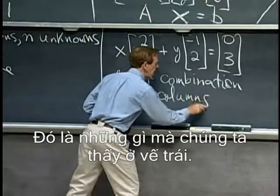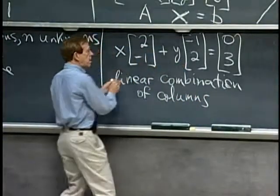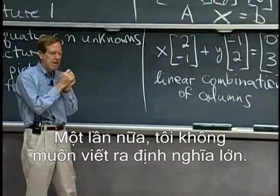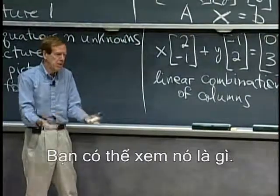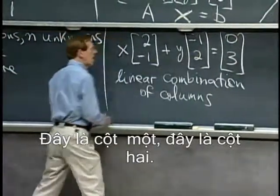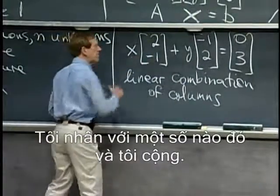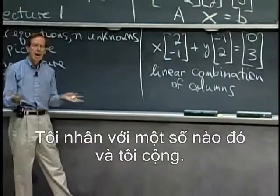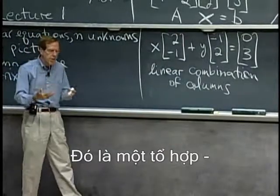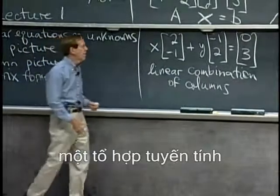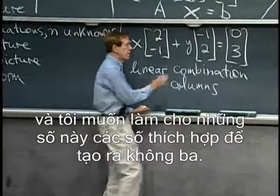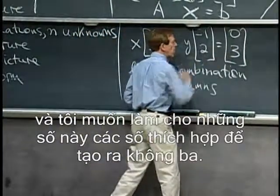It's a linear combination of the columns — that's what we're seeing on the left side. I don't want to write down a big definition; you can see what it is. There's column one, there's column two. I multiply by some numbers and I add. That's a linear combination, and I want to make those numbers the right numbers to produce zero three.